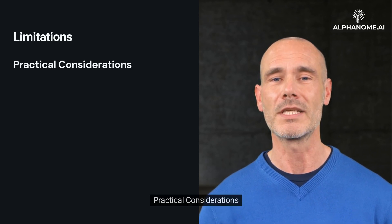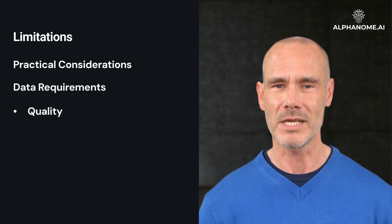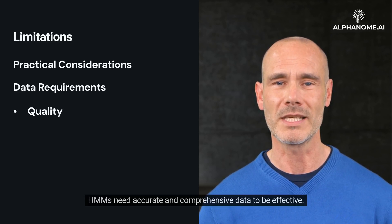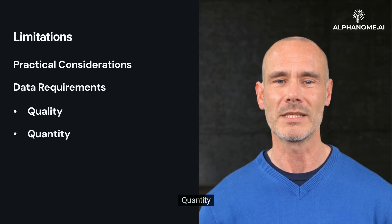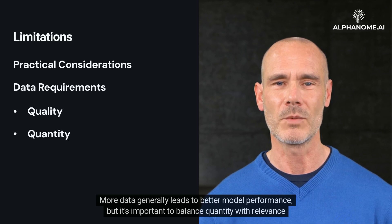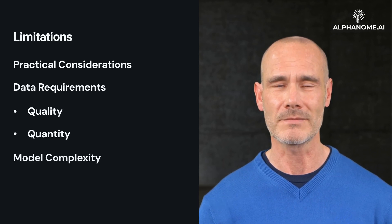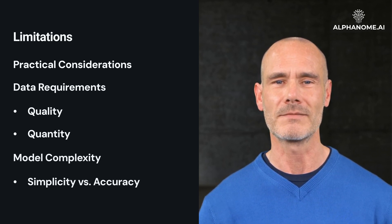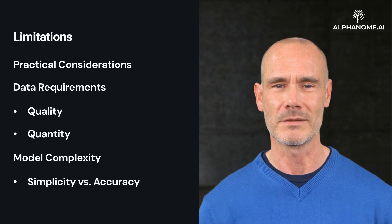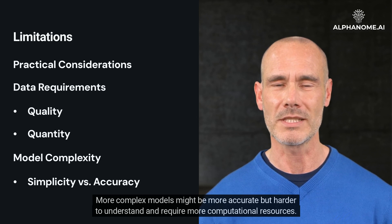Practical considerations. Data requirements — Quality: Investment decisions require high-quality data; HMMs need accurate and comprehensive data to be effective. Quantity: More data generally leads to better model performance, but it's important to balance quantity with relevance and recency. Model complexity — Simplicity versus accuracy: Simpler models are easier to interpret but may not capture complex market dynamics, while more complex models might be more accurate but harder to understand and require more computational resources.